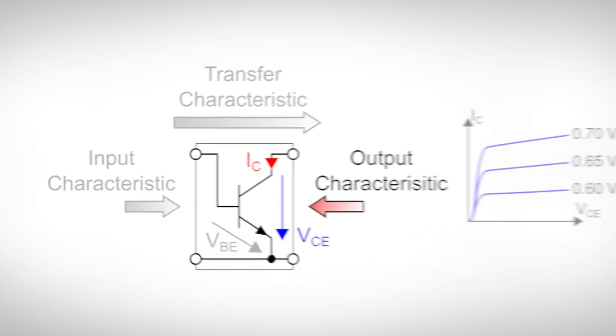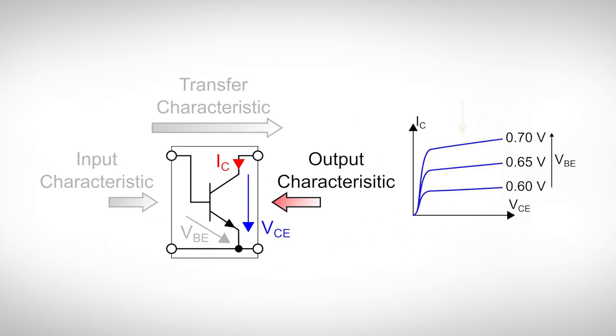To represent these different characteristics, a couple of selected lines are drawn into the output characteristic at once. Each of these lines belongs to a certain base current IB or base emitter voltage VBE. In fact, there is an infinite number of lines, but then things would become too crowded.